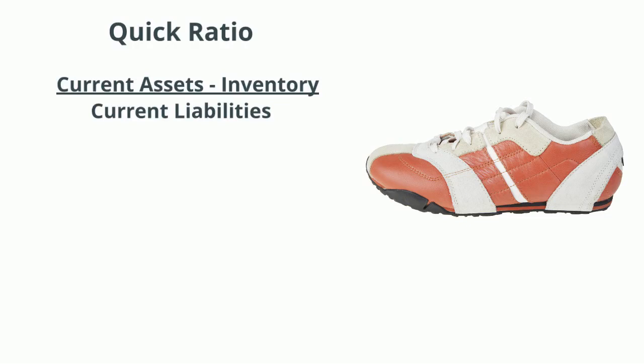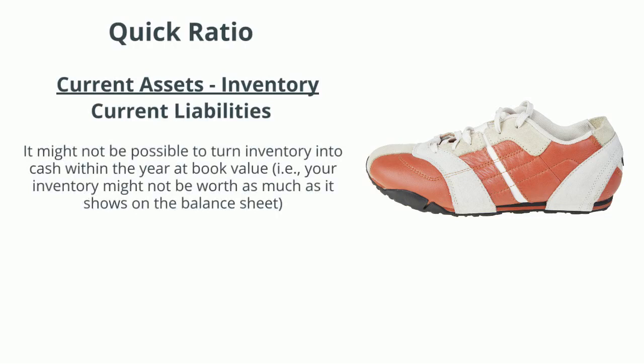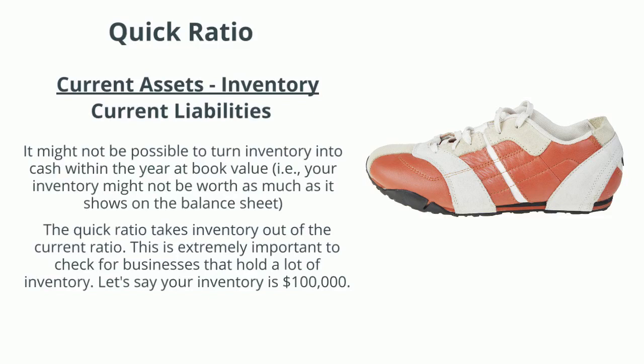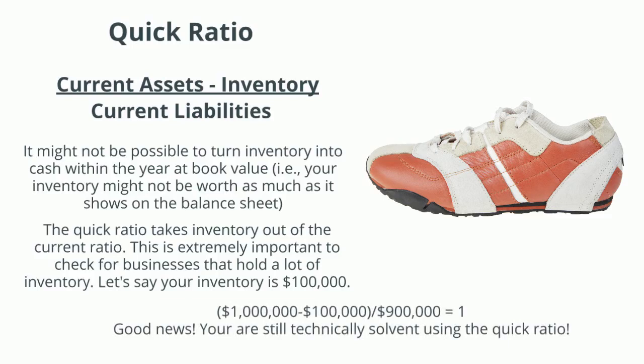Now the quick ratio — it might not actually be possible to turn inventory into cash within the year at book value, so the quick ratio takes inventory out of the current ratio. This is really important for businesses that hold a lot of inventory. If your inventory is $100,000, removing that from current assets gives you a quick ratio of 1.0 — you're still technically solvent.